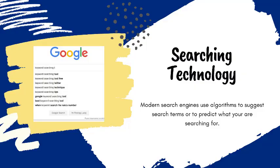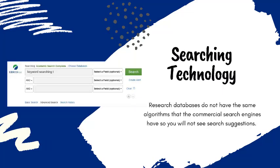Google and many other web-based search engines use smart searching technology to deliver search results that the technology predicts you will click on or want to see. When using a search engine like Google, I can type out my entire question in the search box and I will see relevant results.